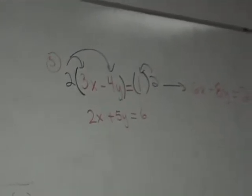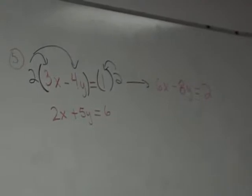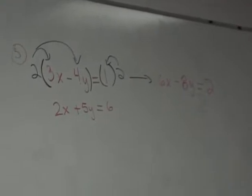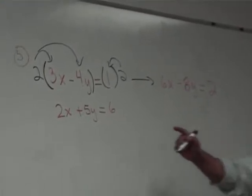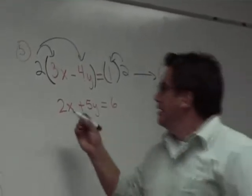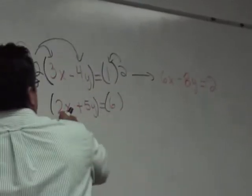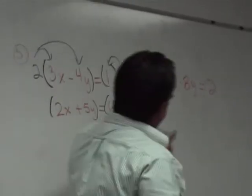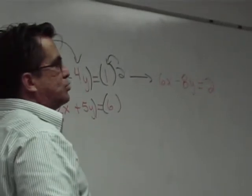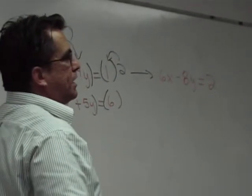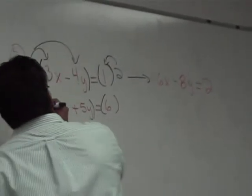Any questions with that step? Make sure you ask me if you're not quite clear. Now, the second equation: we need the opposite of this number to cancel the x's. We need negative 6 right here. So that means we must multiply the bottom by negative 3.